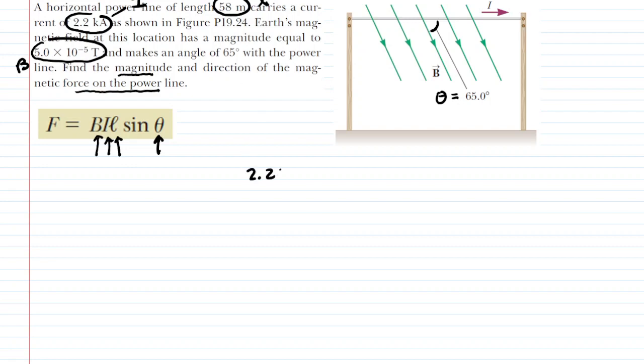So we'll take the 2.2 kiloamps, and then we will recall that 1 kiloamp is equal to 10 to the power of 3 amps. And when we multiply by that conversion factor, the kiloamps cancel out, and we end up with 2200 amps. That is the value of the current, and with the other stated values, we can go ahead and plug in.